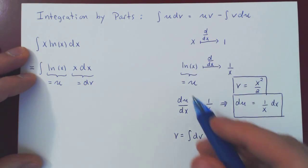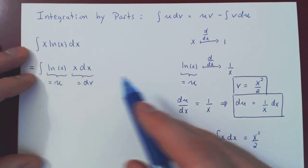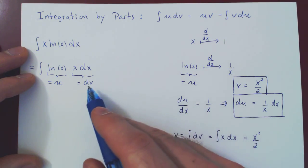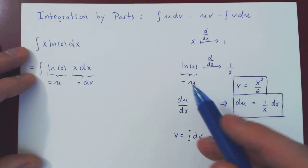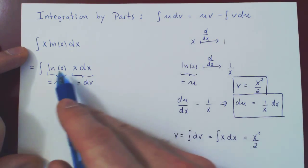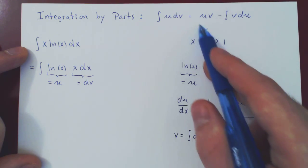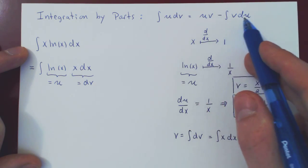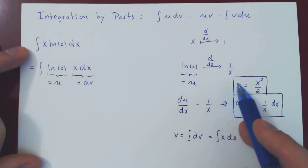And now we have everything we need. We have our u, we have our du, we have our dv, we have our v. And so now we can go from the left-hand side, which is our integral, to the right-hand side, just replacing all the four quantities with what we've just found.